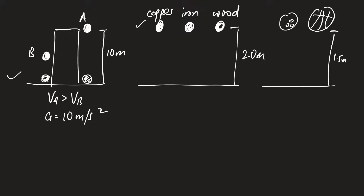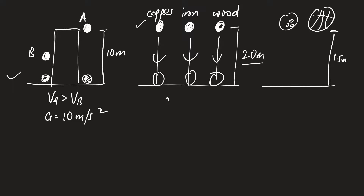Likewise, for the second scenario, all three balls — even though they are made of different materials — because of their compact size the surface area is very small, and you are dropping from a height of two meters which is relatively short. The speed will not be too high, so air resistance can be ignored. All three will drop at the same time, at the same speed, and the only constant is that all three have the same acceleration: 10 m/s².